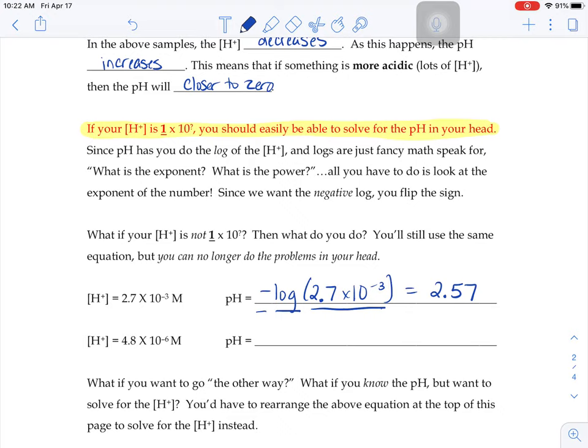Or if we did, what is the pH of a substance that had a H+ concentration of 4.8 times 10 to the negative 6? We're going to do the negative log of 4.8 times 10 to the negative 6. If you type that in your calculators, you'll get an answer of 5.32 approximately.